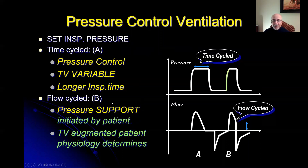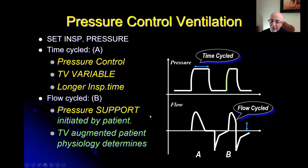Flow-cycled pressure ventilation is called pressure support, which is initiated and terminated by the patient. The tidal volume is augmented by the patient's own physiology. Generally, you dial in pressure support to deliver adequate tidal volumes of approximately 300 to 350 cc. This is generally a weaning mode.